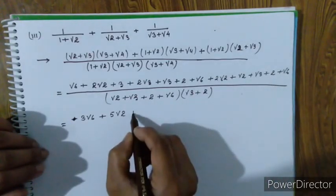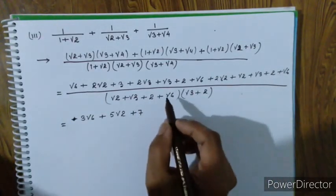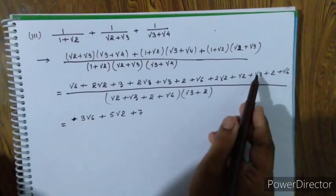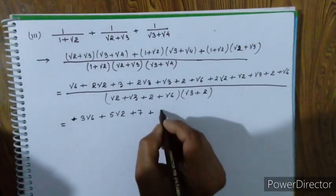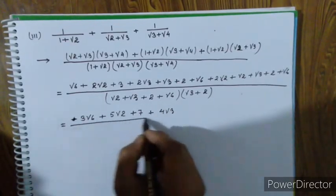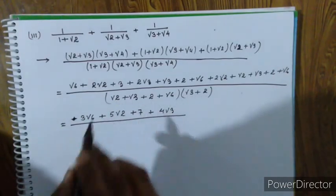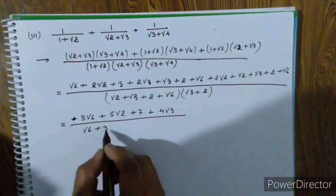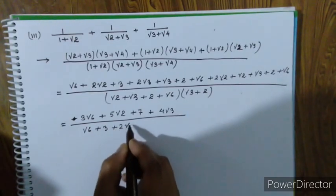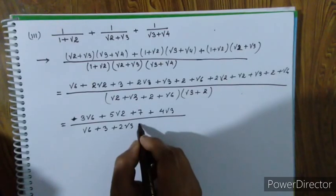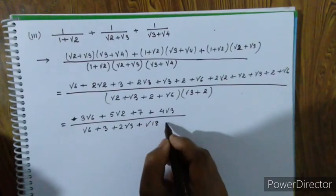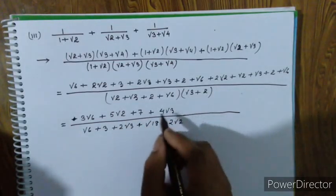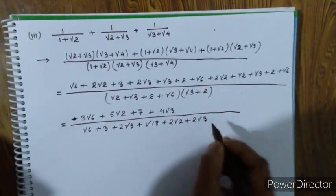5, 6, 7 plus 7. This is root 3. Root 3, root 3. 6 root 6, plus 3, plus 2 root 3, plus root 18, plus 2 root 2, plus 2 root 3, plus 4.